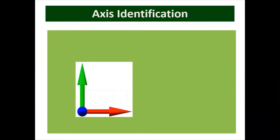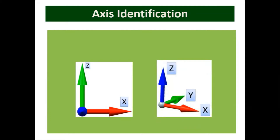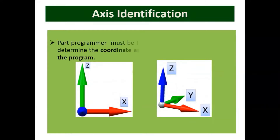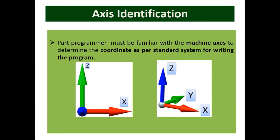In this diagram, we have shown the two axes — X and Z — which are mostly used in the CNC lathe machine. When more axes are added, that is the X, Y, and Z axis, those are used for the milling machine. A part programmer must be familiar with the machine axes to determine coordinates as per the standard system, and should be aware of the axes to formulate the movement of the slide in various directions for writing the program.